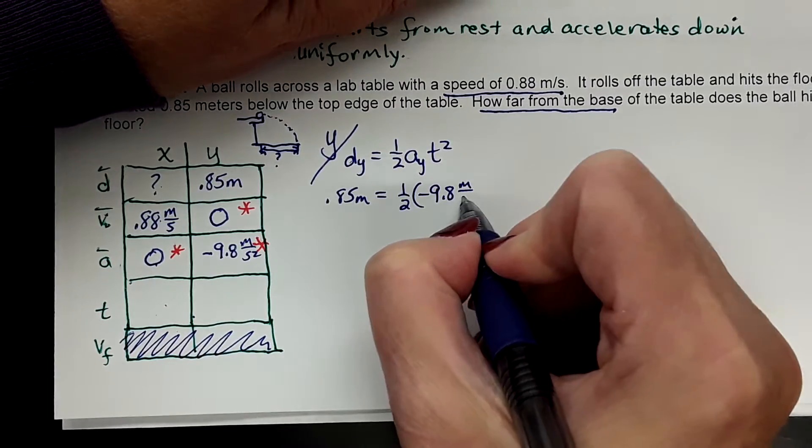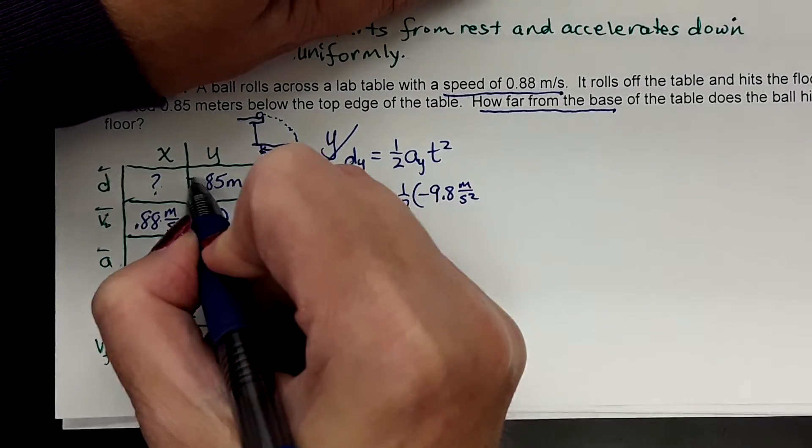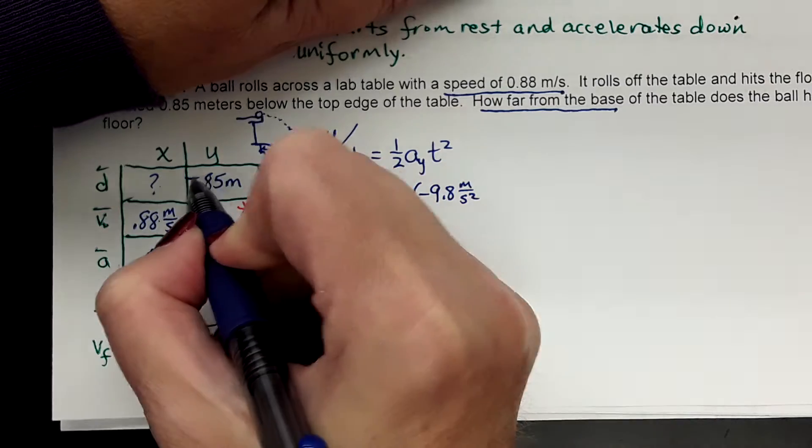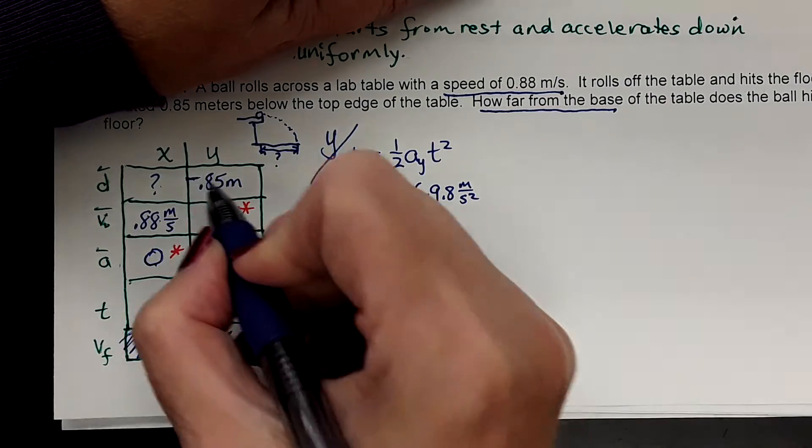Times negative 9.8 meters per second squared. Oops, I almost forgot - this is down also, it should be negative. I keep forgetting that.